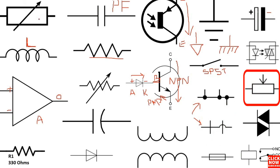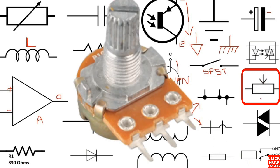This is the potentiometer. It has exactly the same working principle as a variable resistor. This arrow means you can adjust the resistance — we call it a potentiometer resistor.